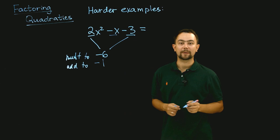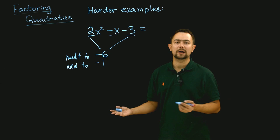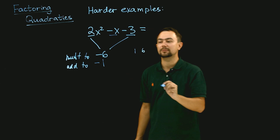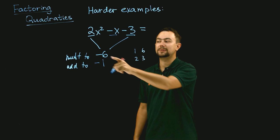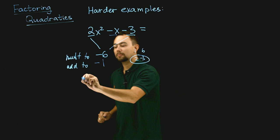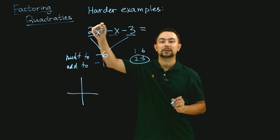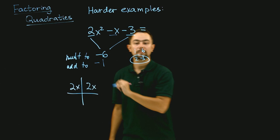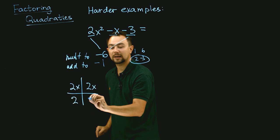And they add to negative 1, because the coefficient of x is negative 1. Listing combinations: 1 and 6, 2 and 3. One of them has to be negative because the product is negative. So it's minus 3 and 2. We make a table, writing the first term without the square — so just 2x — and on the bottom we write the two numbers: 2 and negative 3.